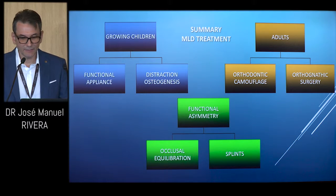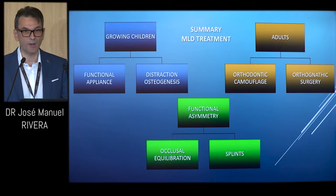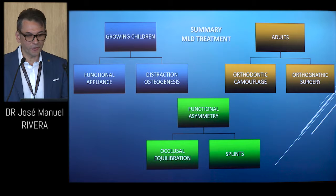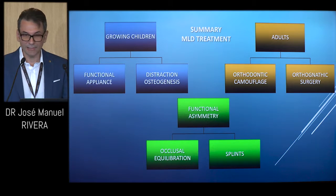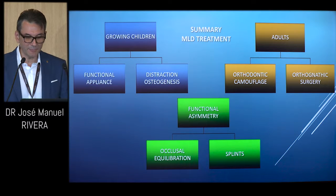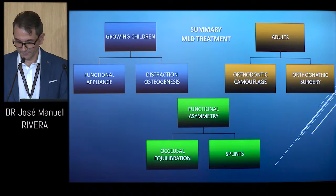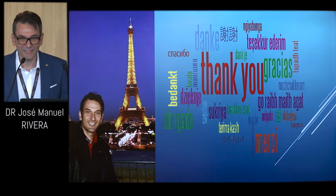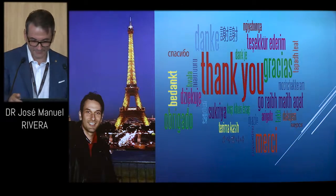To summarize, the following treatment options are available for each type of asymmetry problem. For growing children, we have functional appliances and distraction osteogenesis. For adults, we have orthodontic camouflage or orthognathic surgery. For functional asymmetry problems, we have occlusal equilibration or the use of splints. Merci beaucoup — that ends my lecture. Thank you.